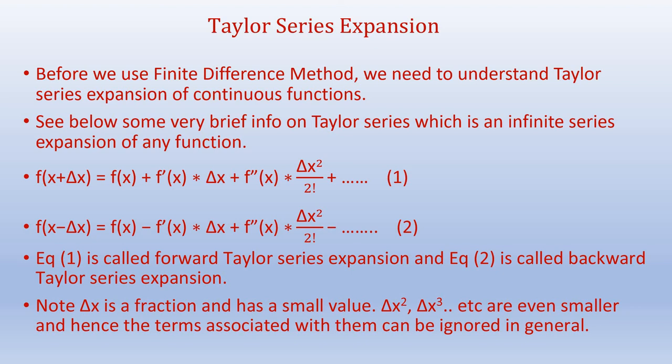So if f of x is a continuous function, we can say f of x plus delta x equals f of x plus f dash of x times delta x plus f double dash of x times delta x squared by 2 factorial and so on. Where f dash of x is the first derivative of f of x and f double dash of x is the second derivative of f of x with respect to x.